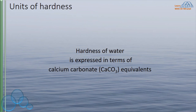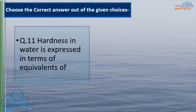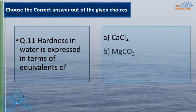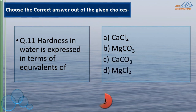Units of hardness. Bicarbonates, chlorides, nitrates, and sulfates of calcium and magnesium impart hardness to water. It is convenient to express the hardness caused by these salts in terms of the equivalent hardness of a single salt. Calcium carbonate is conveniently chosen for this purpose — its molecular weight is 100. So hardness of water is expressed in terms of calcium carbonate equivalence.